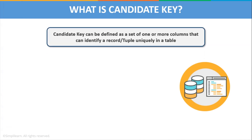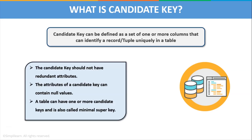Next, let us discuss about the candidate key. A candidate key is defined as a set of one or more columns that can uniquely identify a record in a table. Candidate key is a super key with no repeated attributes. The primary key should be selected from all the candidate keys, and every table must have at least a single candidate key. A table can have multiple candidate keys but only a single primary key. Candidate keys should not have redundant attributes, meaning no duplicate values. Unlike primary key, the attributes of a candidate key can contain null values. It is also called the minimal super key because we select a candidate key from a set of super keys such that the selected candidate key has the minimum attributes required to uniquely identify rows in a table.